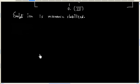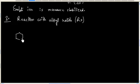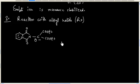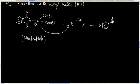In the next step, we have reaction with alkyl halide. The enolate ion acts as a nucleophile and attacks on the alkyl halide, so we will have a nucleophilic substitution reaction and we will have this product.